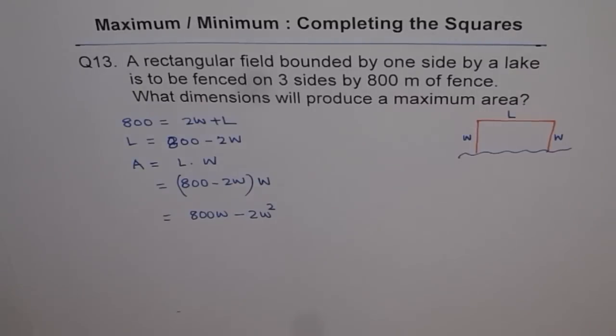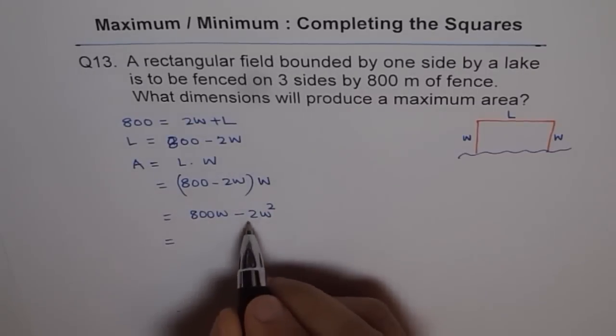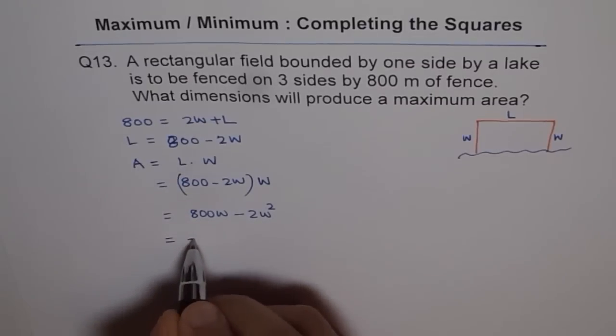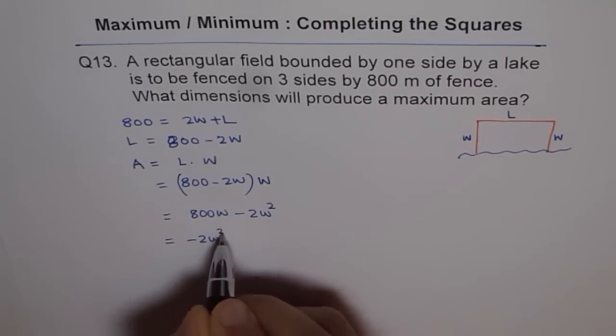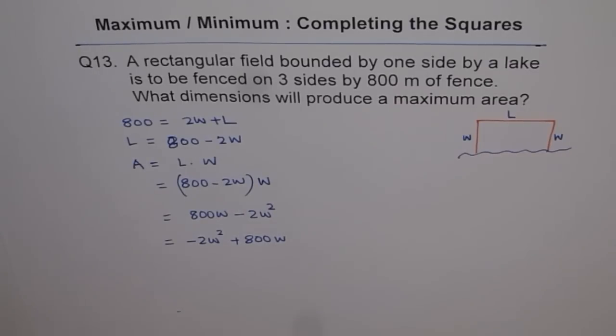Then we get 800W minus 2W square. Now whenever you are writing a quadratic equation, remember that leading coefficient should come first. Leading coefficient means coefficient of highest power. Here the highest power is 2. And therefore we'll write this as minus 2W square plus 800W. So we have an equation here.